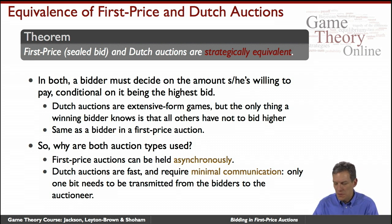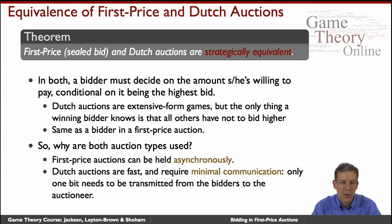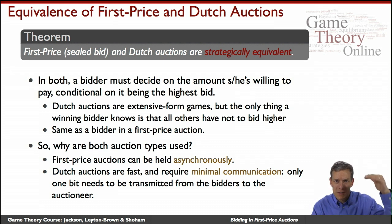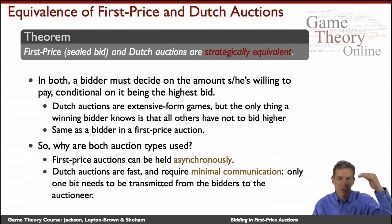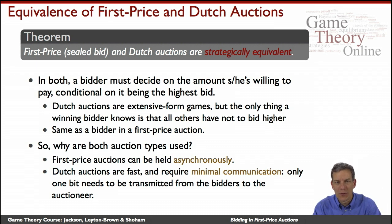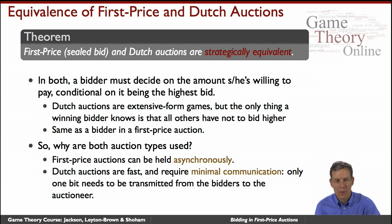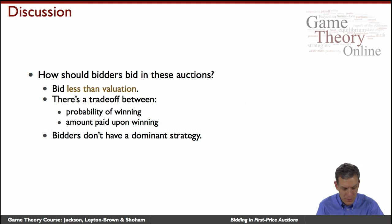Dutch auctions, in contrast, require people together watching the clock go down. But the nice thing is you don't need much communication — all you need is the price to drop and then somebody to say yes. Only one bit needs to be transmitted from the bidders to the auctioneer, so it's very efficient in terms of information communication. So there are practical differences between these auction implementations.